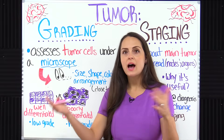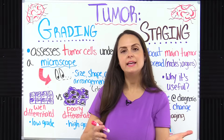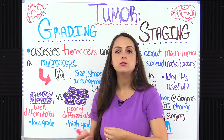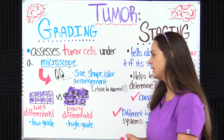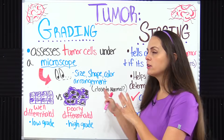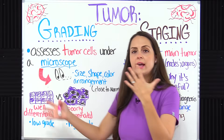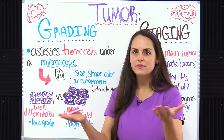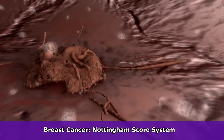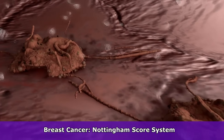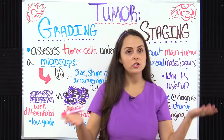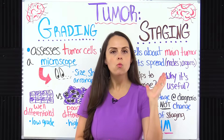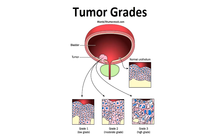With this low to high grade rating, we can give it a numerical rating to reflect what type of grade it is. However, it's important to note that not all cancers use the same type of grading system — it really depends on the cancer. For example, breast cancer uses the Nottingham score system. So let's look at the basic numerical system that grades it one through three or one through four.